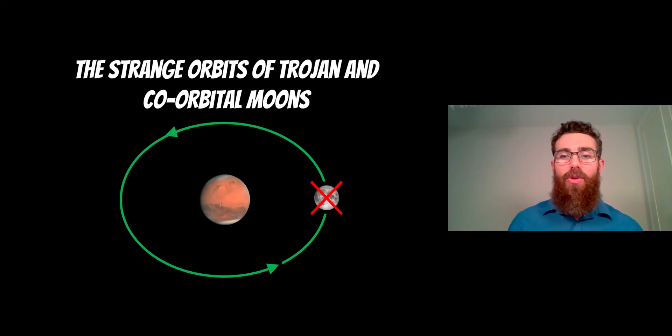Normally when we think of a moon, it's on an orbit around a planet. It's fairly straightforward, but these Trojan and co-orbital moons take orbits that are slightly more unusual, maybe a bit more chaotic than what we would normally assume.